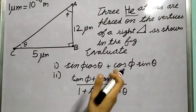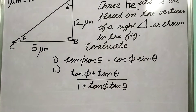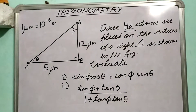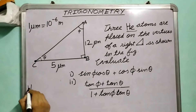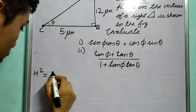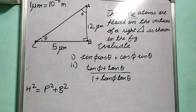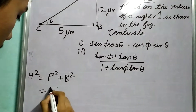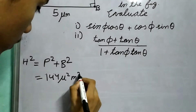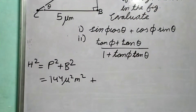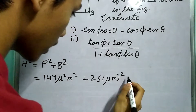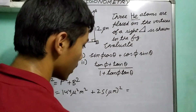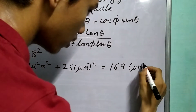In the first part we need to evaluate sin φ cos θ plus cos φ sin θ. We don't have the hypotenuse in this triangle, but we can solve for it using the Pythagorean theorem: h squared equals p squared plus v squared. So it's 25 plus 144 micrometer squared for the base, giving us 169 micrometer squared for the hypotenuse squared.